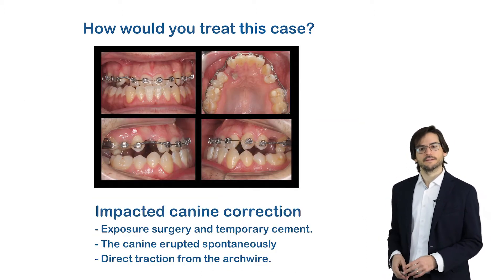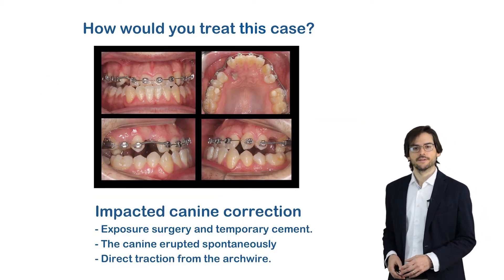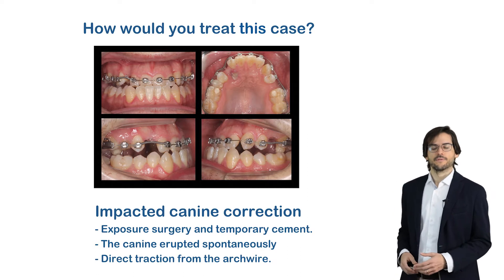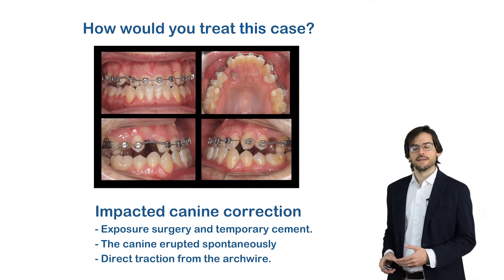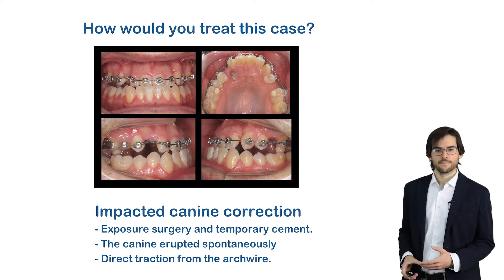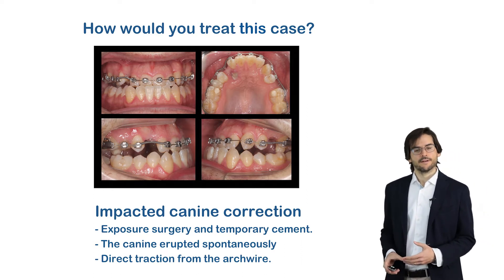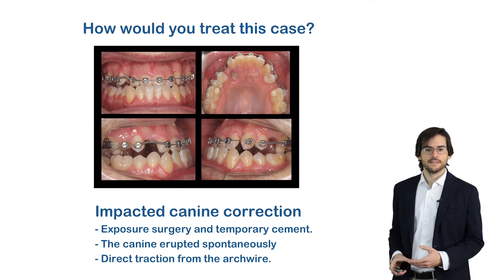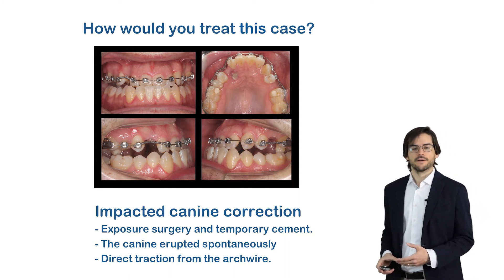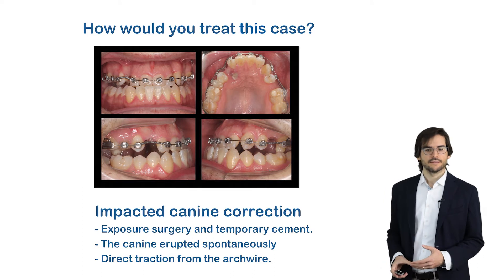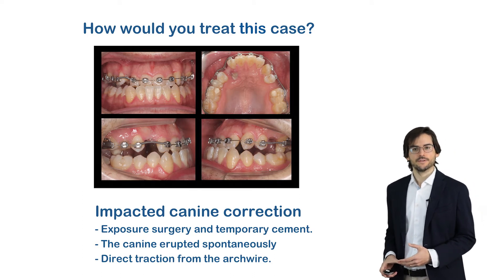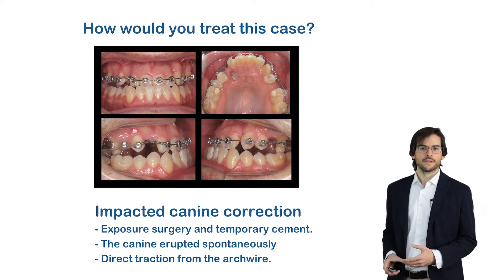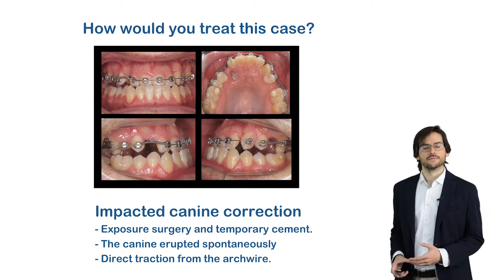Regarding the impacted canine correction, exposure surgery was performed and after that temporary cement was placed to avoid the exposure from closing. The canine erupted spontaneously three months later, and then Tip-Edge Plus brackets were placed in the maxillary arch. After that, direct traction from the archwire was used, always applying very soft forces.